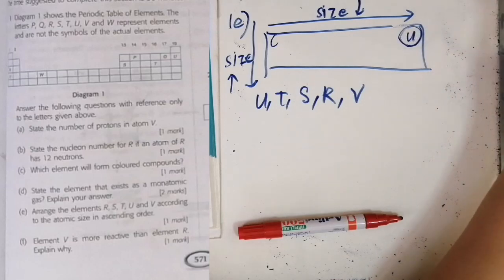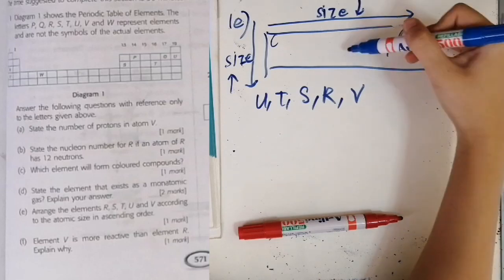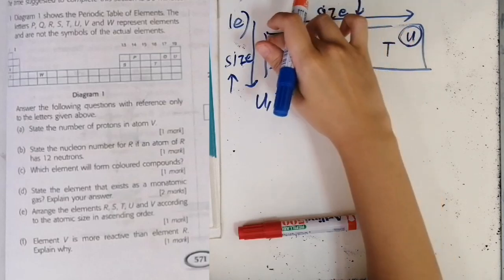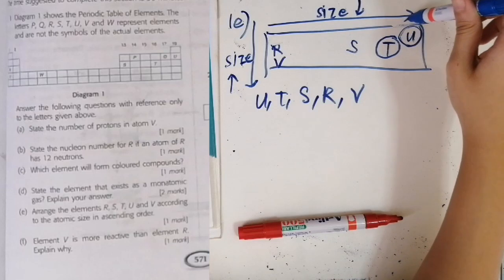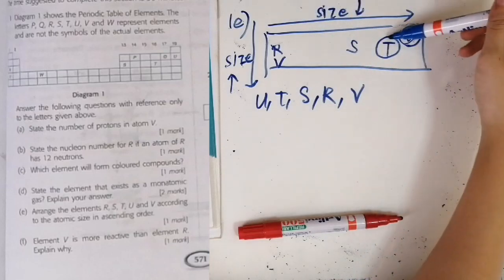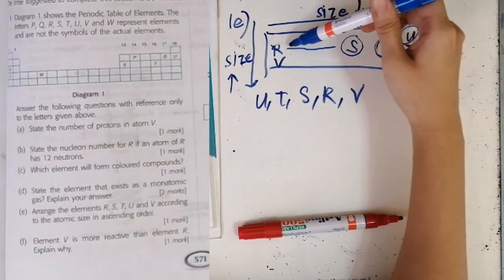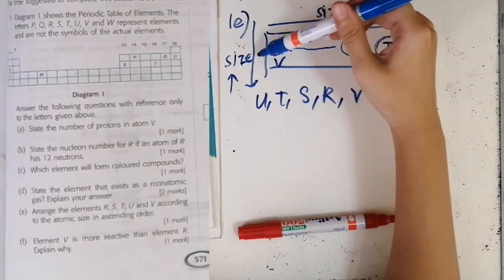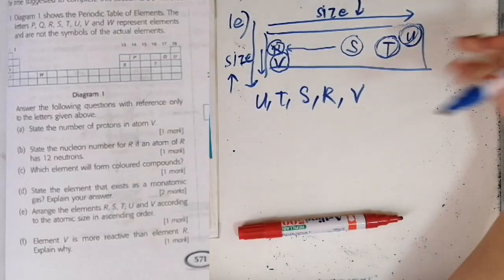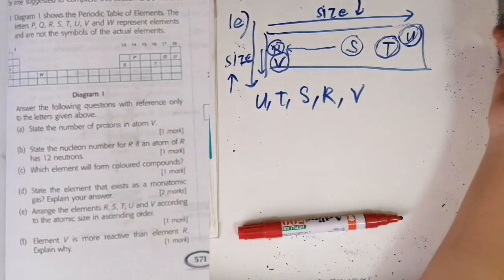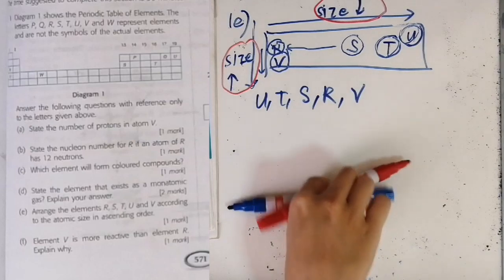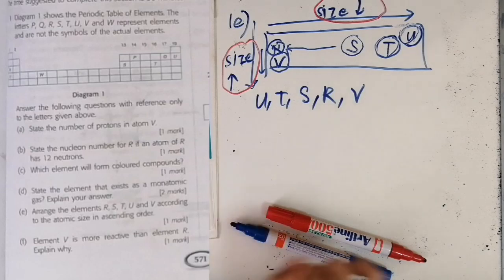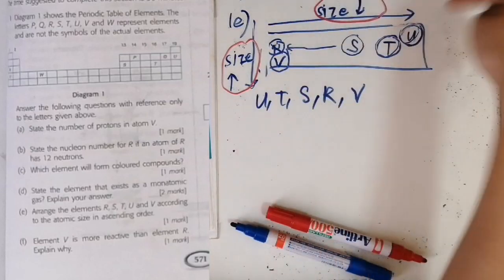As you go down from U's position, the size becomes larger, so D is next, then S, then R. The size increases as you proceed down the group, so V is the biggest. Just compare positions slowly one by one. The key rule to remember: when going down a group, size increases; when going to the right across a period, size decreases. Once you know this, it's easier to solve these questions — and this is a favorite exam question type.